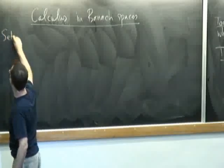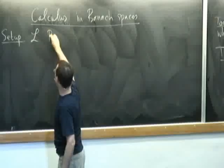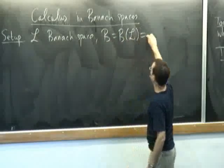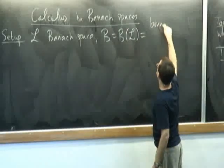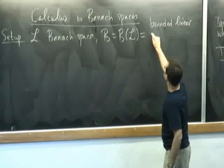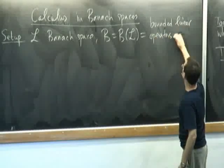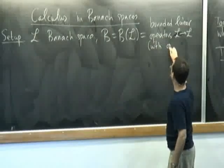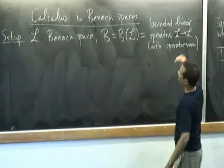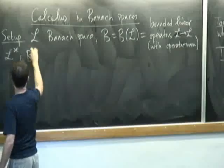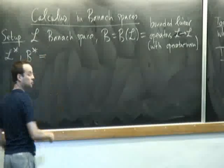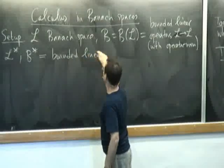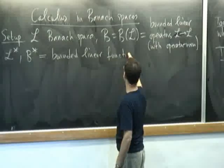The setup is going to be the following. L will be a Banach space, and B will be the space of bounded linear operators on L — bounded linear operators from L to L with the usual operator norm. And we let L-star and B-star be the dual spaces, which are the spaces of bounded linear functionals on these Banach spaces.